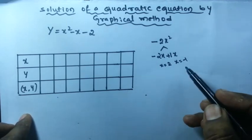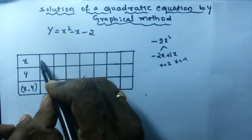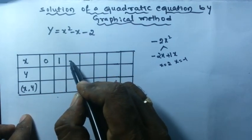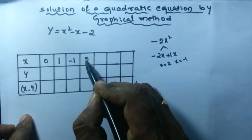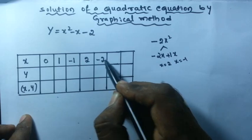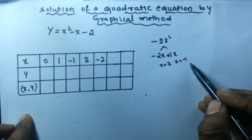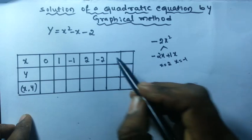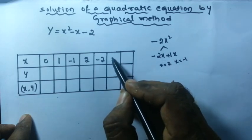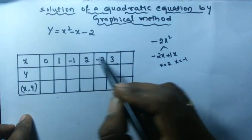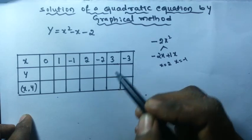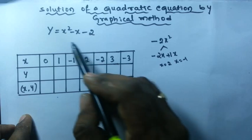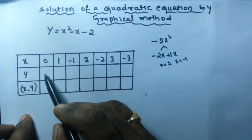Now I am going to take the x values: 0, 1, minus 1, 2, minus 2. Minus 1 and plus 2 is enough, but I will take more — also 3 and minus 3. Give these values to x and you will get the y value.